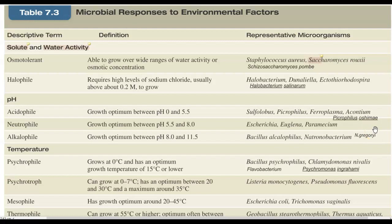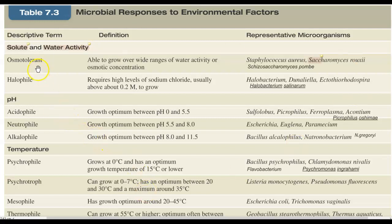Classification based on solute and water activity considers how dissolved substances and relative water availability influence microbial growth. Organisms are divided into osmo-tolerant and halophilic groups. An example of a halophile is Halobacterium salinarum, which requires sodium chloride above 0.2 molar concentration for growth. Osmo-tolerant organisms grow over a wide range of water activity or osmotic concentrations.